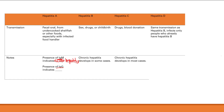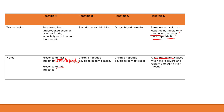Hepatitis D is very similar to hepatitis B — same transmission: sex, drugs, childbirth. The key thing is that hepatitis D only infects people who already have hepatitis B, because hepatitis D cannot make its own envelope protein. It steals hepatitis B's envelope protein to survive. This causes a super infection — much more severe and rapidly damaging liver infection — and you can progress to liver failure very quickly.